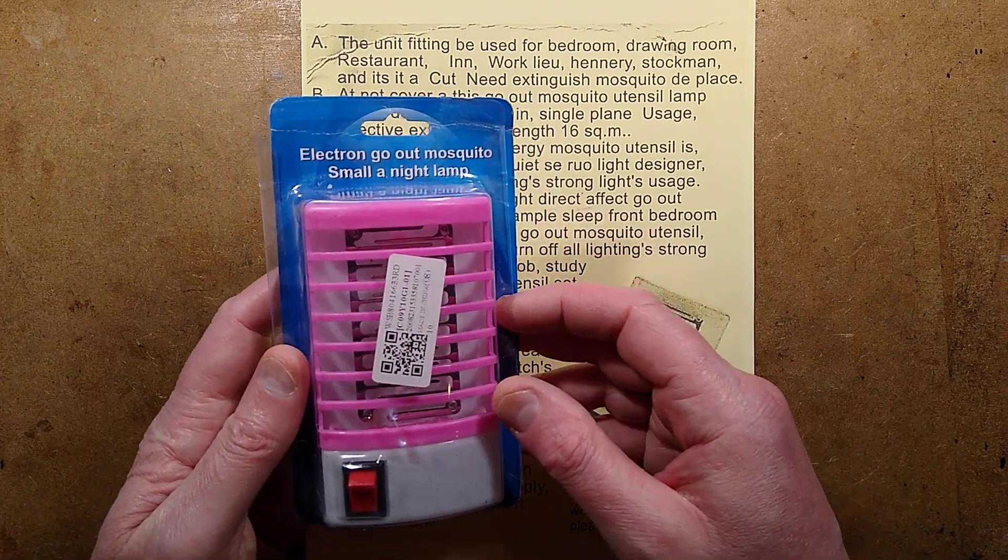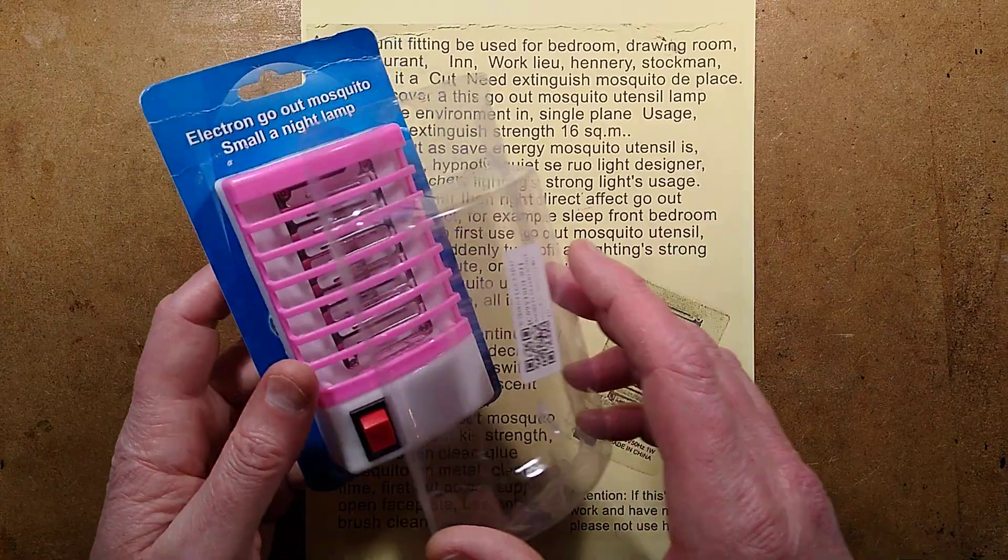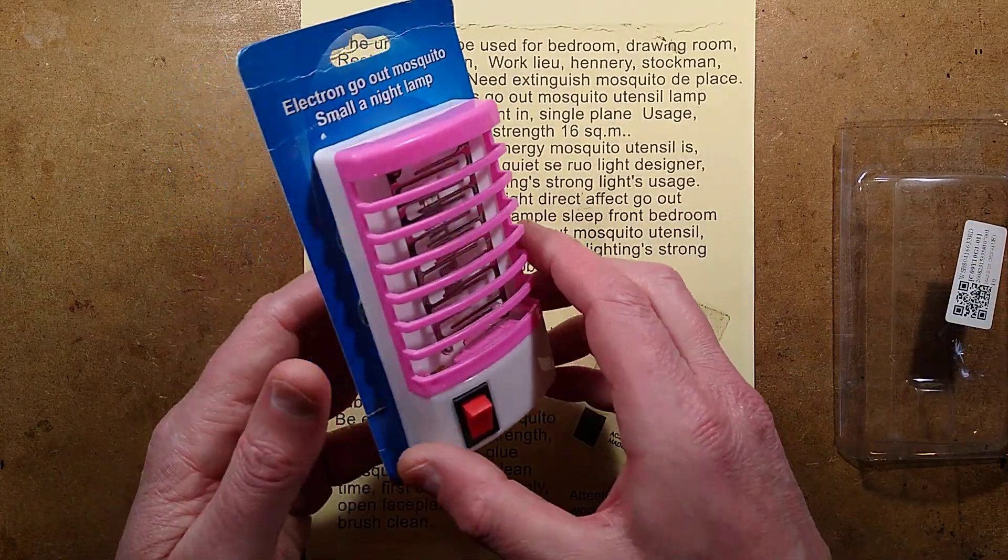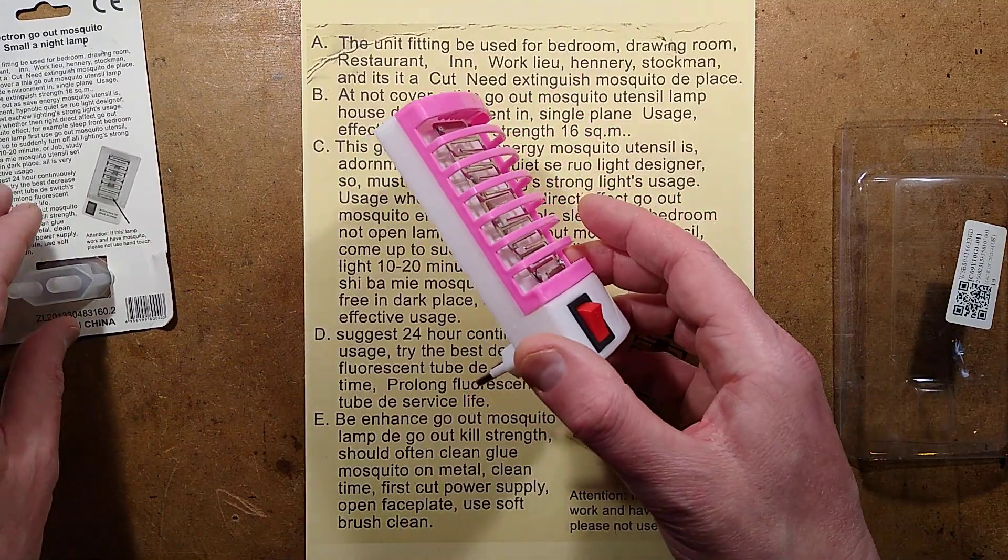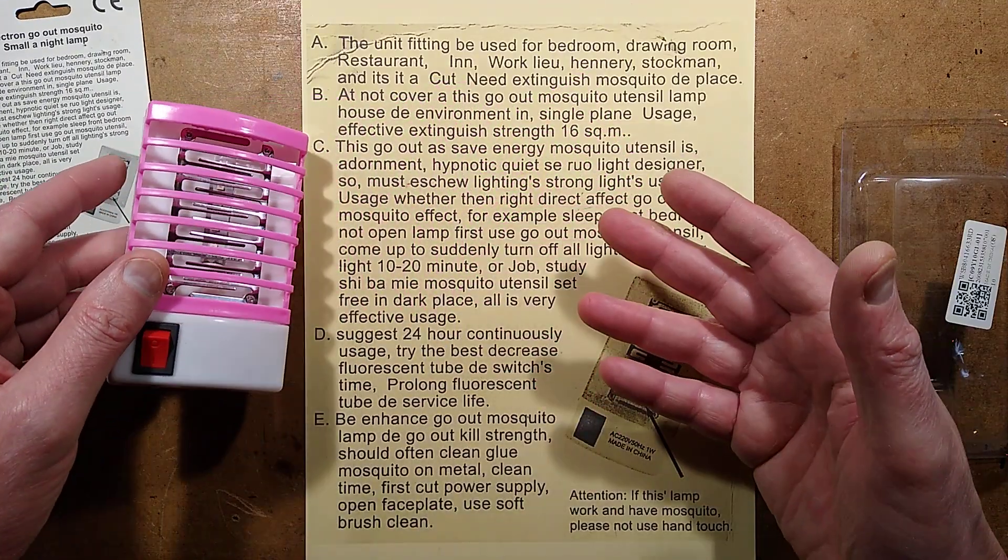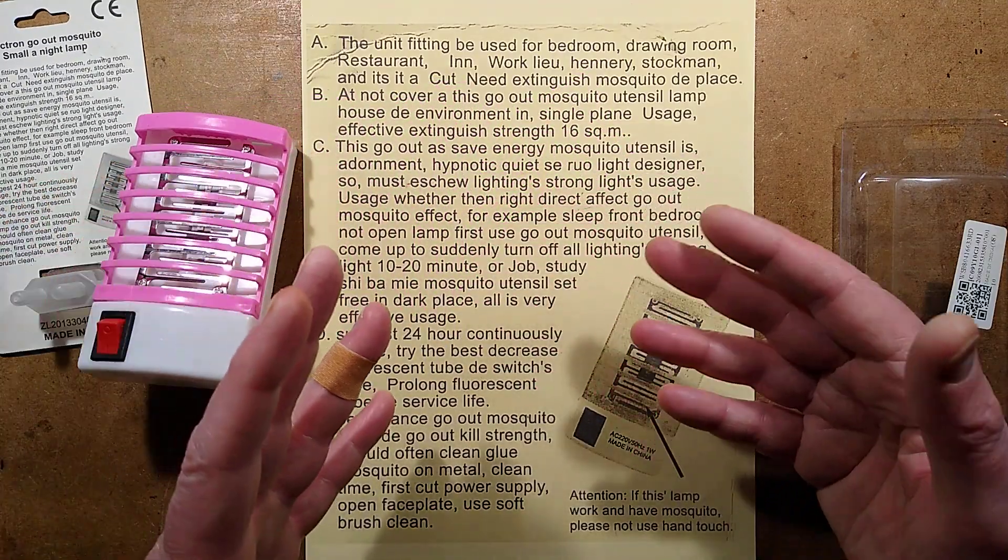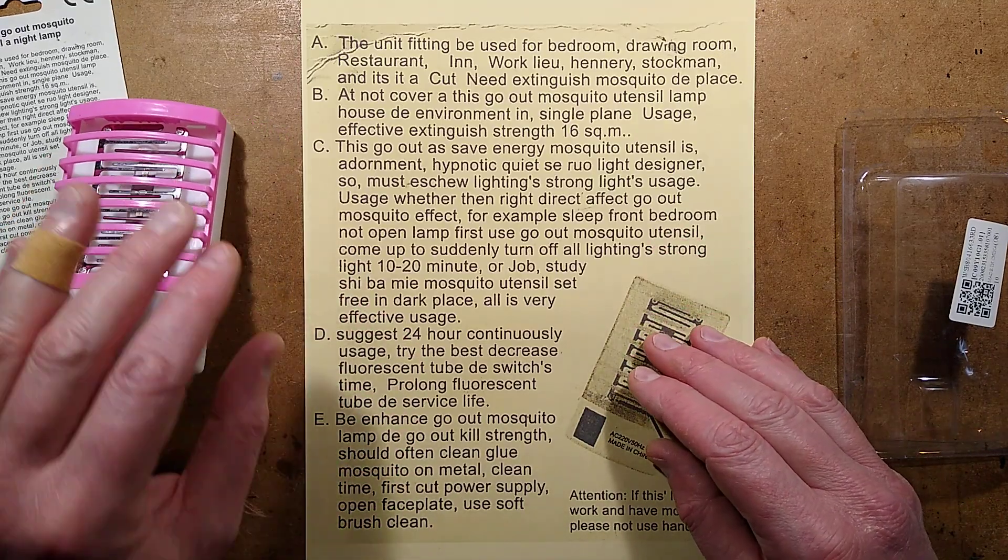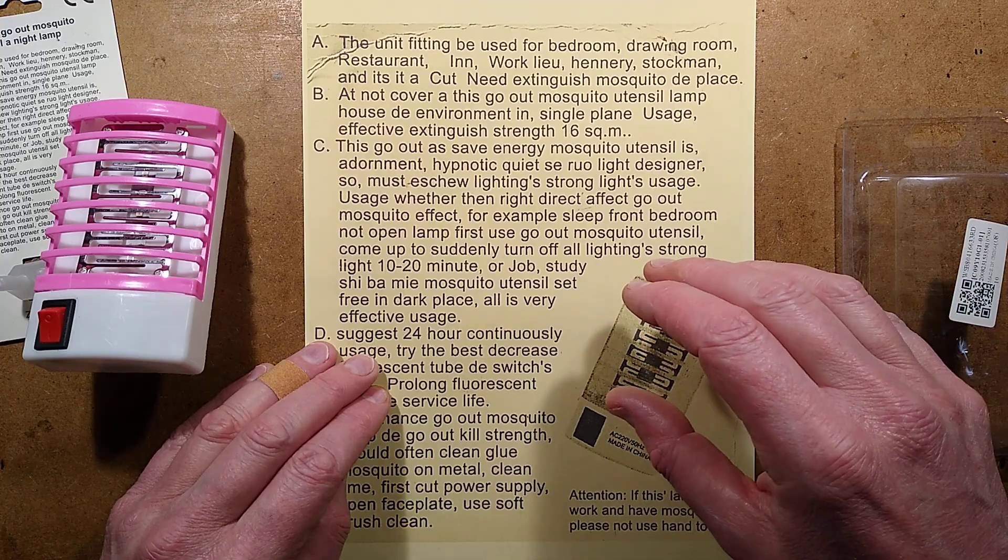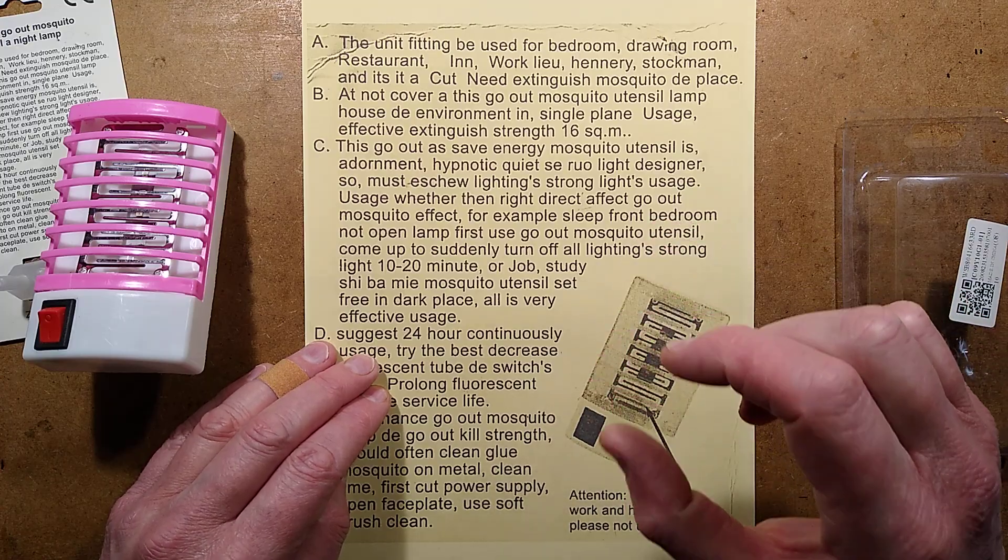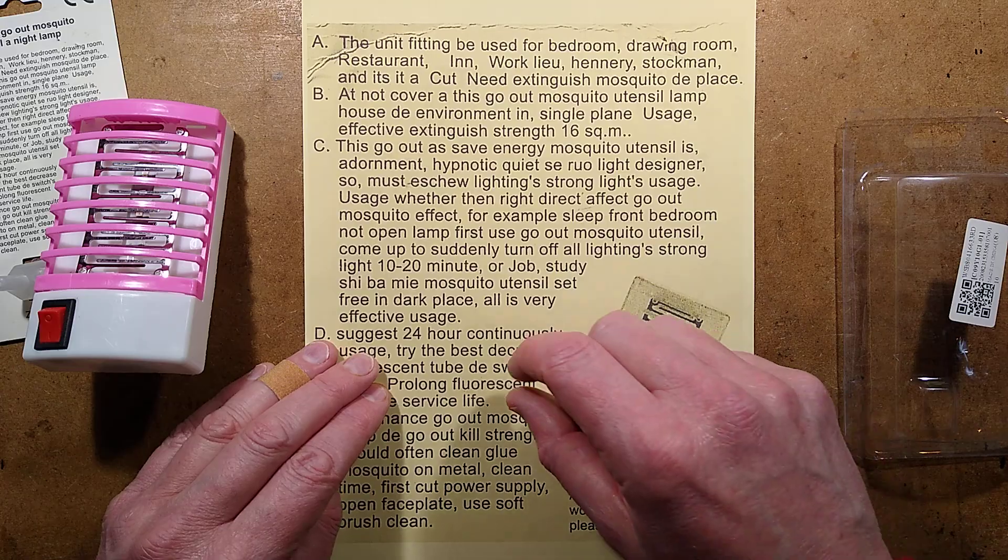This is an interesting product. It's the Electron Go-Out Mosquito Smaller Nightlamp, and I've featured this before on more than one occasion because it's really quite interesting. It seems to evolve. Either that or it's from different manufacturers and they all have their different take on the circuitry because the circuit boards are always different inside. One of them exploded. I got that on video and I'll put a link to it down below. It's a little excerpt of video that is quite amazing.